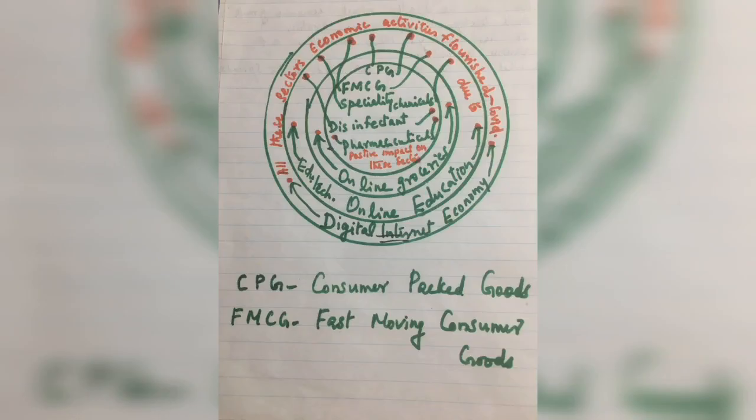Now let us see the positive impact of COVID-19. All the following sectors economic activities flourished due to COVID-19. They are digital internet economy, edu-tech, online education, online groceries, CPG and FMCG, specialty chemicals, disinfectants, pharmaceuticals, life-saving equipments, etc.